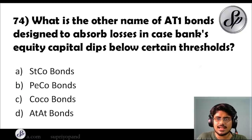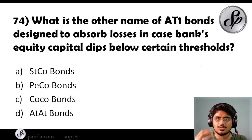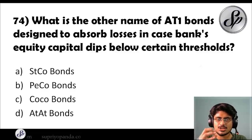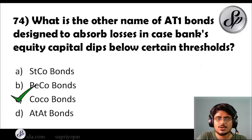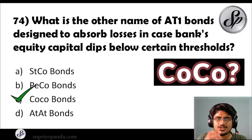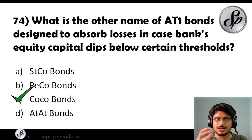Question seventy-four: what is the other name of AT1 bonds — Additional Tier 1 bonds — designed to absorb losses when a bank's equity capital dips below certain thresholds under Basel 3 norms? The answer is CoCo bonds — Contingent Convertible bonds. These bonds transfer risk to the market so that investors and depositors in the bank have less risk. The market is very concerned about CoCo bonds in contemporary times.